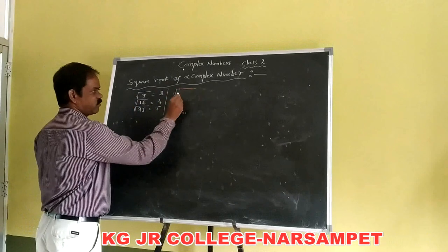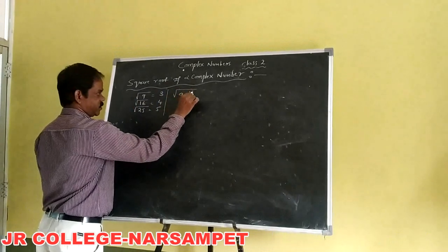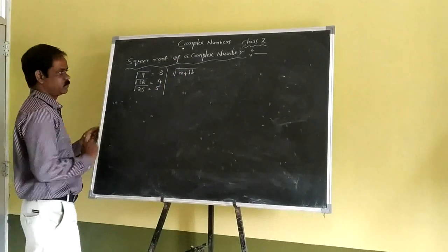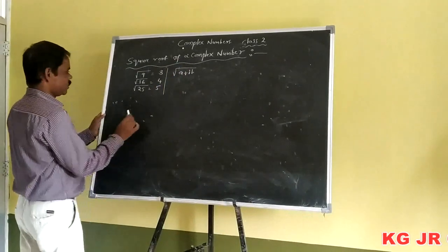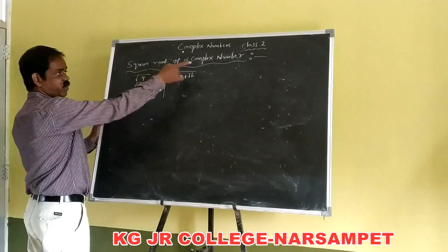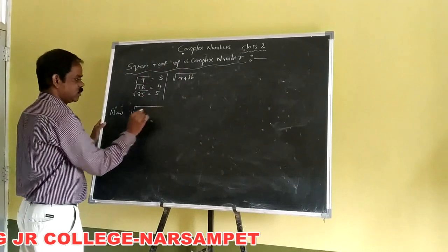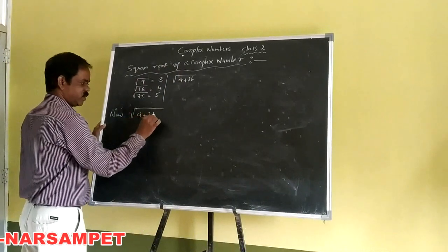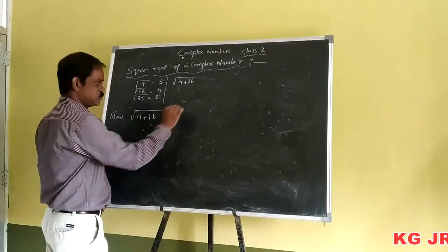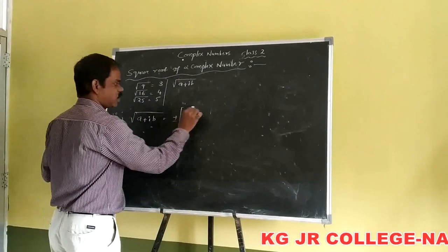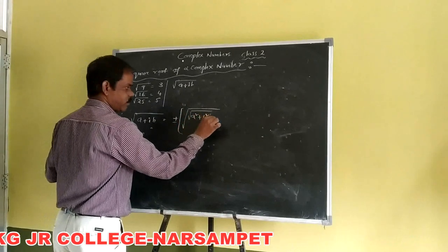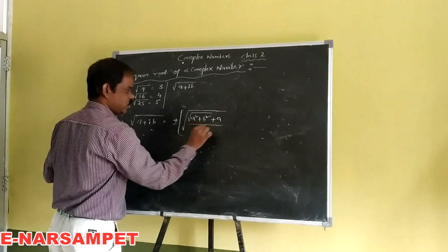Now we have to find the square root of A plus iB. The formula for the square root of a complex number is: square root of A plus iB equals plus or minus of square root of (square root of A squared plus B squared, plus A) divided by 2.